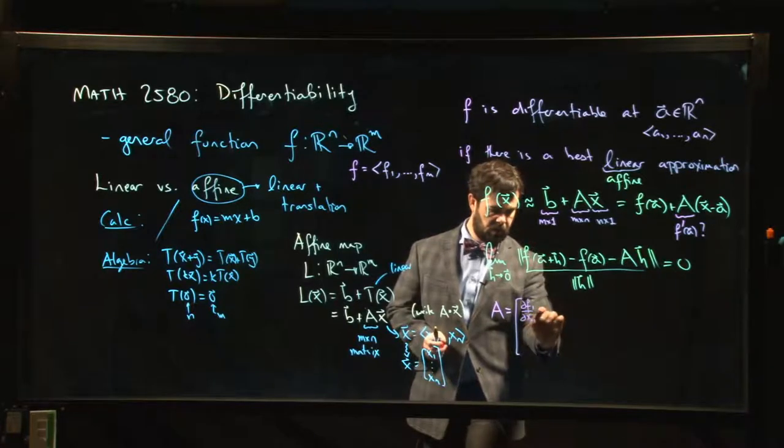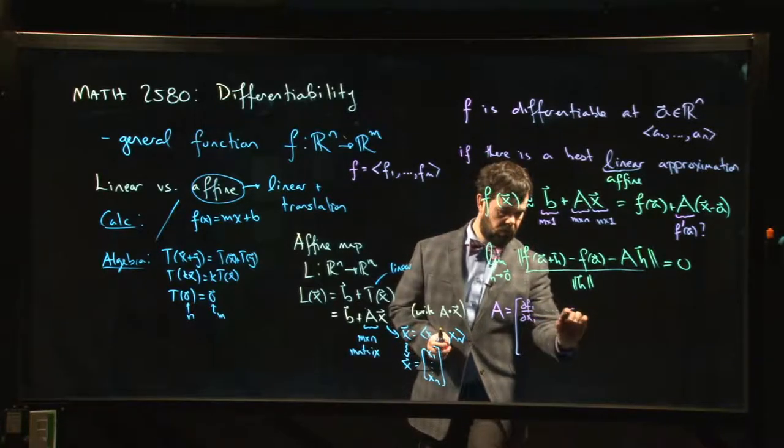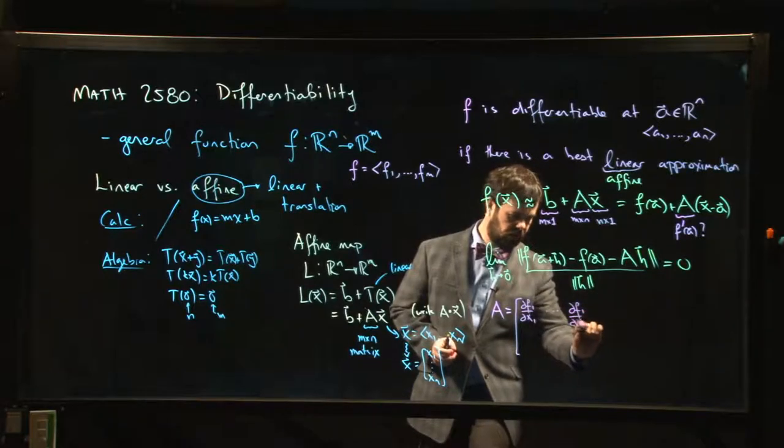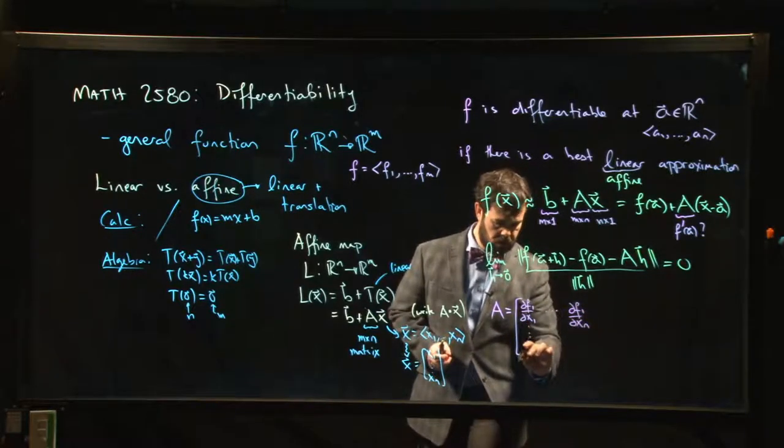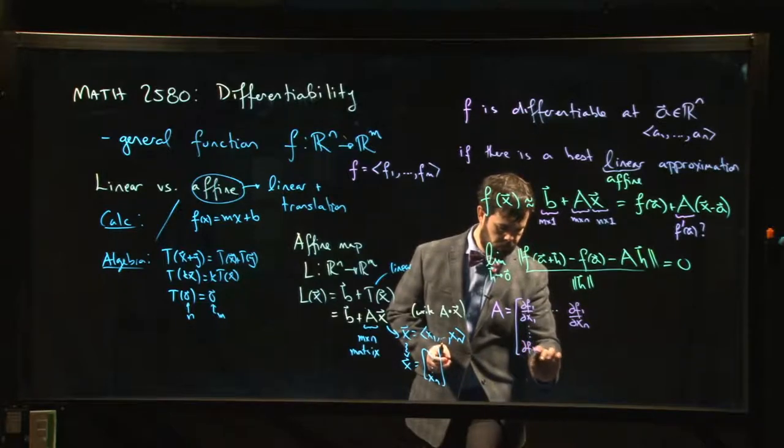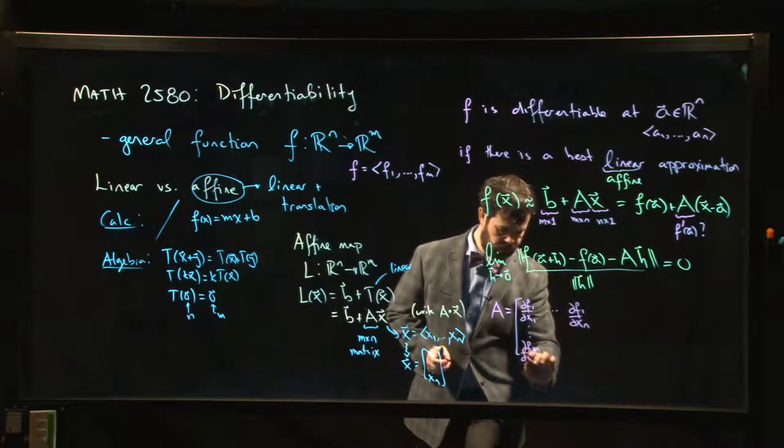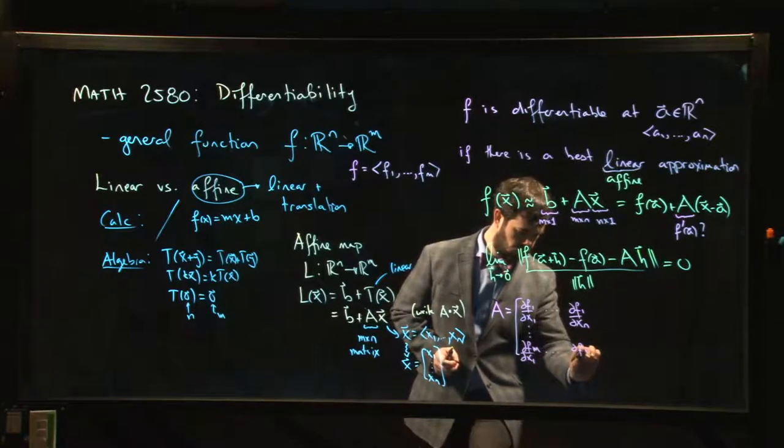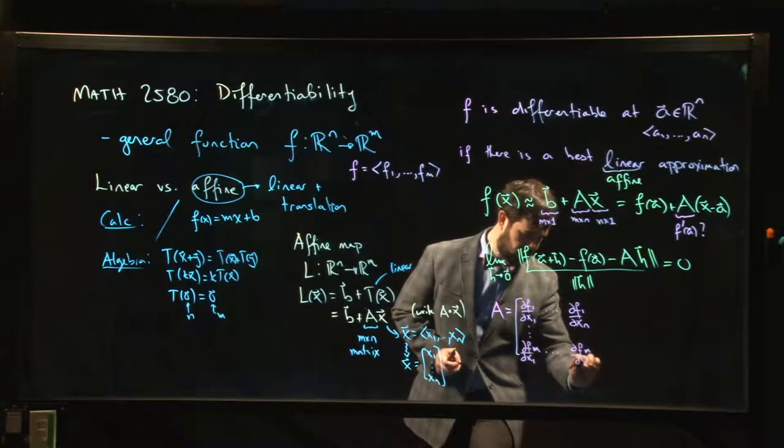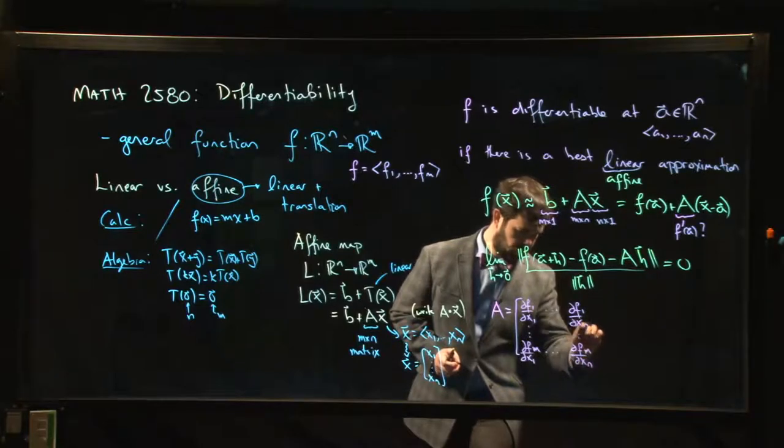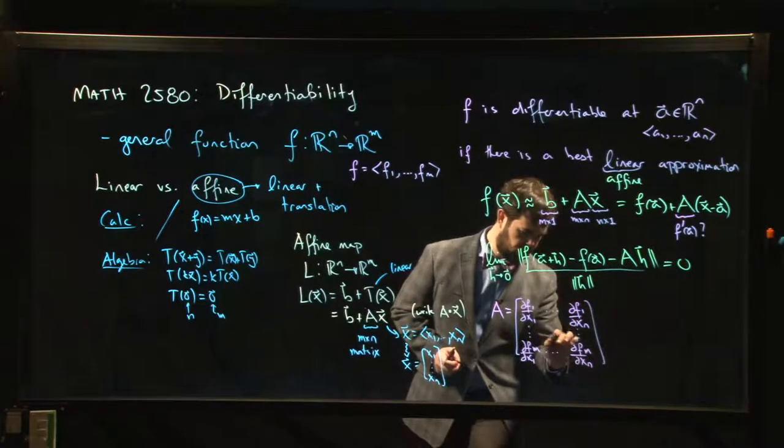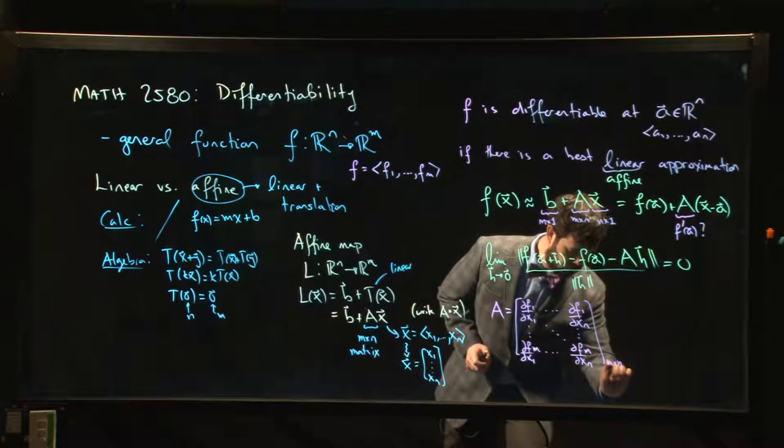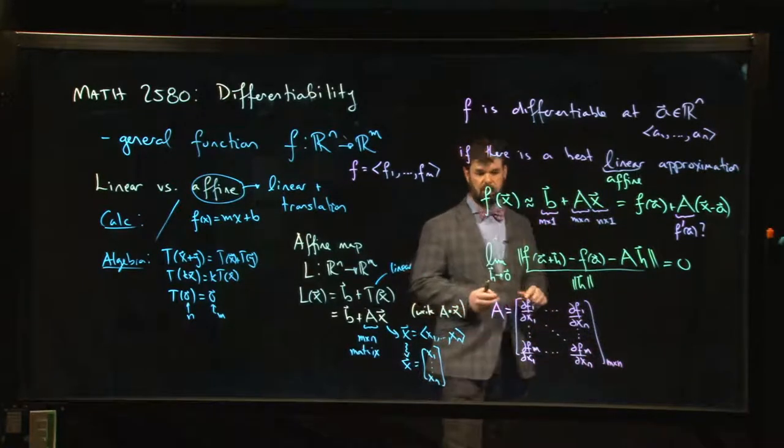And so if you work this out, you find that what this A looks like is it's going to be the partial derivative of the first component with respect to the first variable, all the way across to the partial of the first component with respect to the last variable, and then down to the last component, first variable, and the last variable. So you get this m by n matrix of all the partial derivatives.